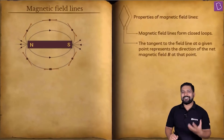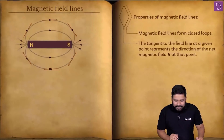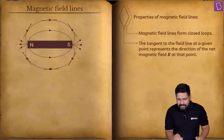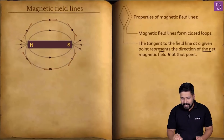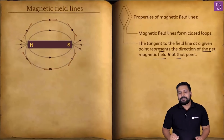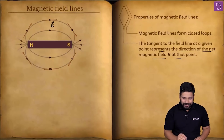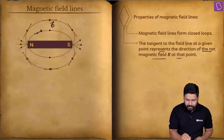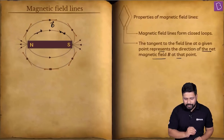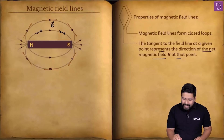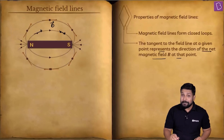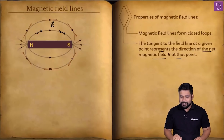The next property: the tangent to the field lines at any given point represents the direction of the net magnetic field at that point. If you want to find the direction of the magnetic field at any point, you simply draw a tangent at that point. A tangent to the field line at a given point represents the direction of the net magnetic field there.